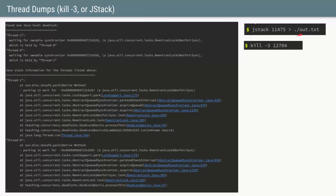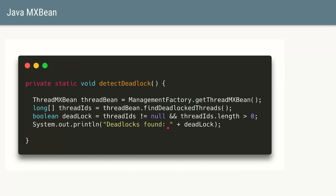Alternatively, you can use the Java tool jstack, specifying the process ID and redirecting output to a file. Within that output, the JVM itself will detect and clearly report any deadlock. For example, it will state that Thread 1 is waiting for a mutex currently held by Thread 0, and Thread 0 is waiting for a mutex held by Thread 1. The method stack is also available so you can see exactly which line triggered the deadlock.